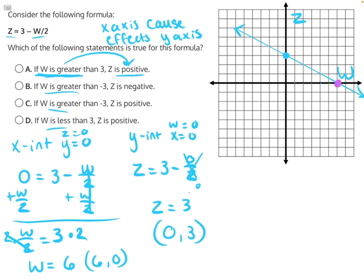Looking at our x-intercept, our w-intercept, everything less than this intercept has positive z values, and everything greater than that intercept has negative z values. So we can say when w is less than 6, z is going to be positive, and when w is greater than 6, z is going to be negative.